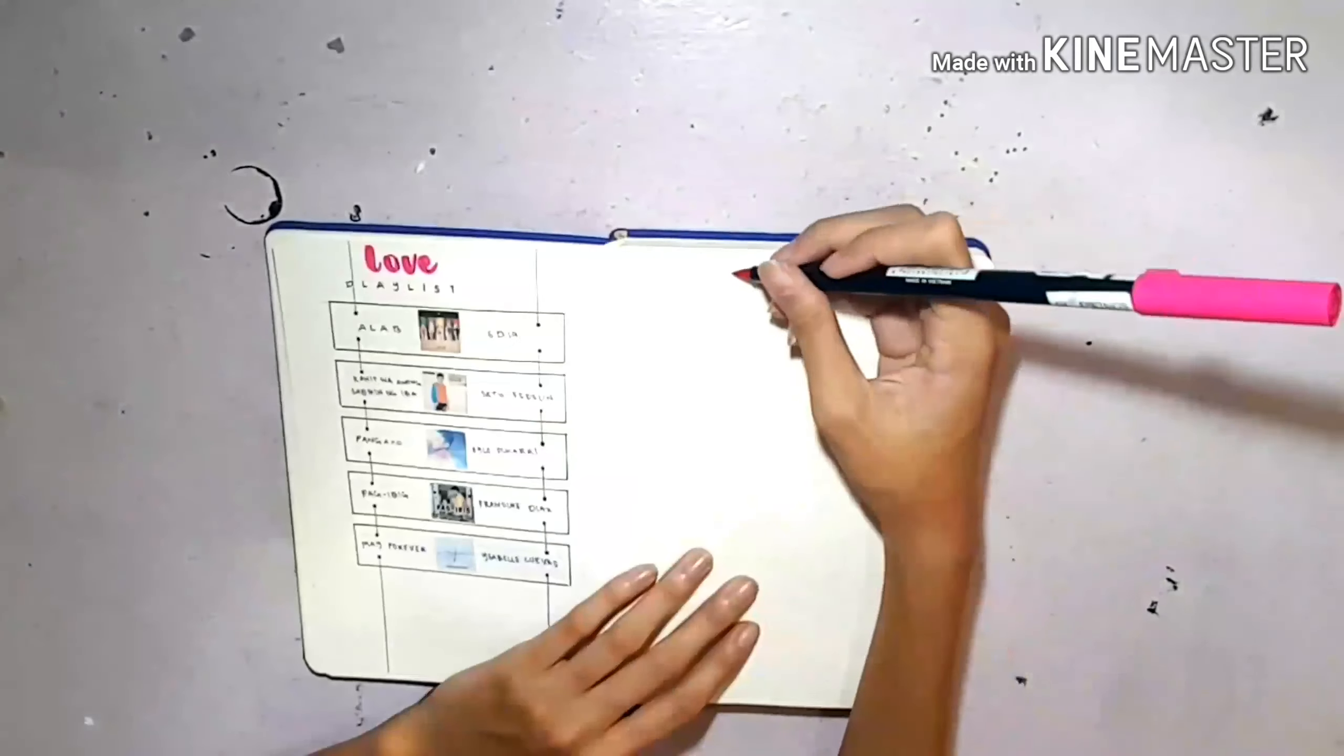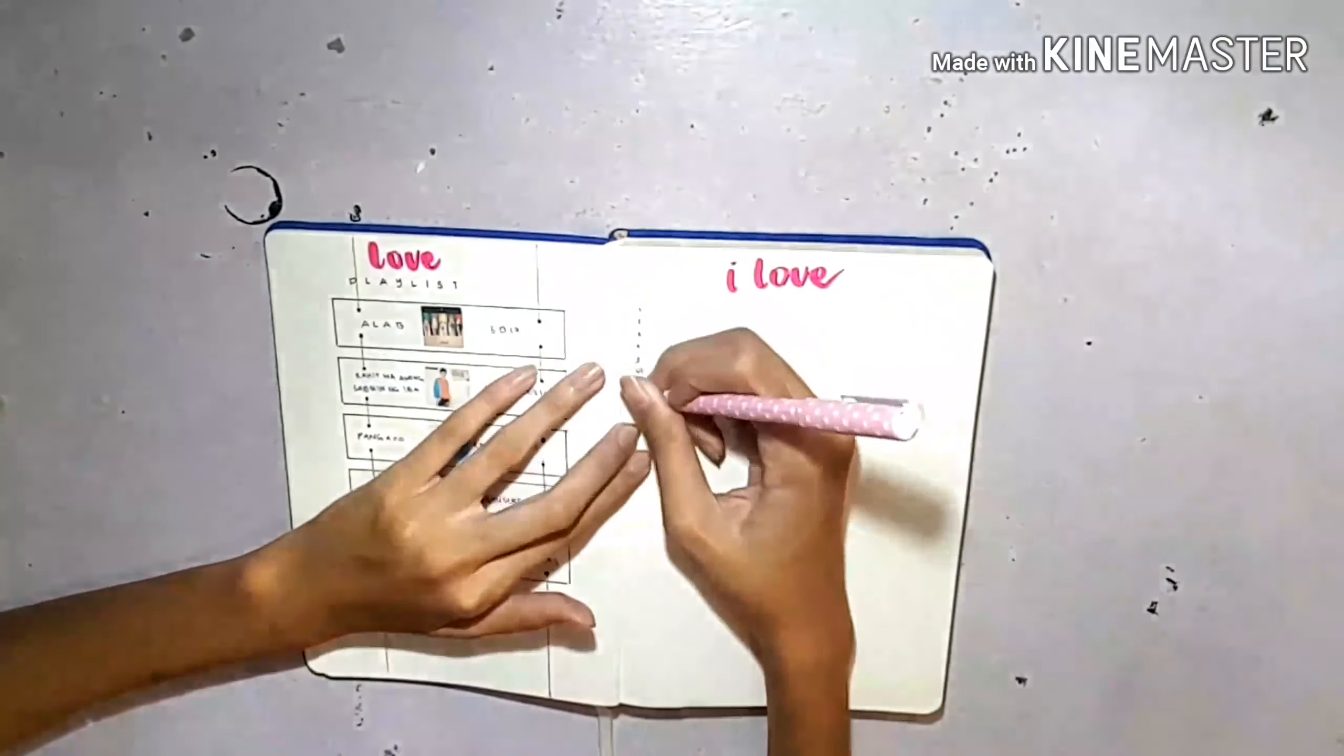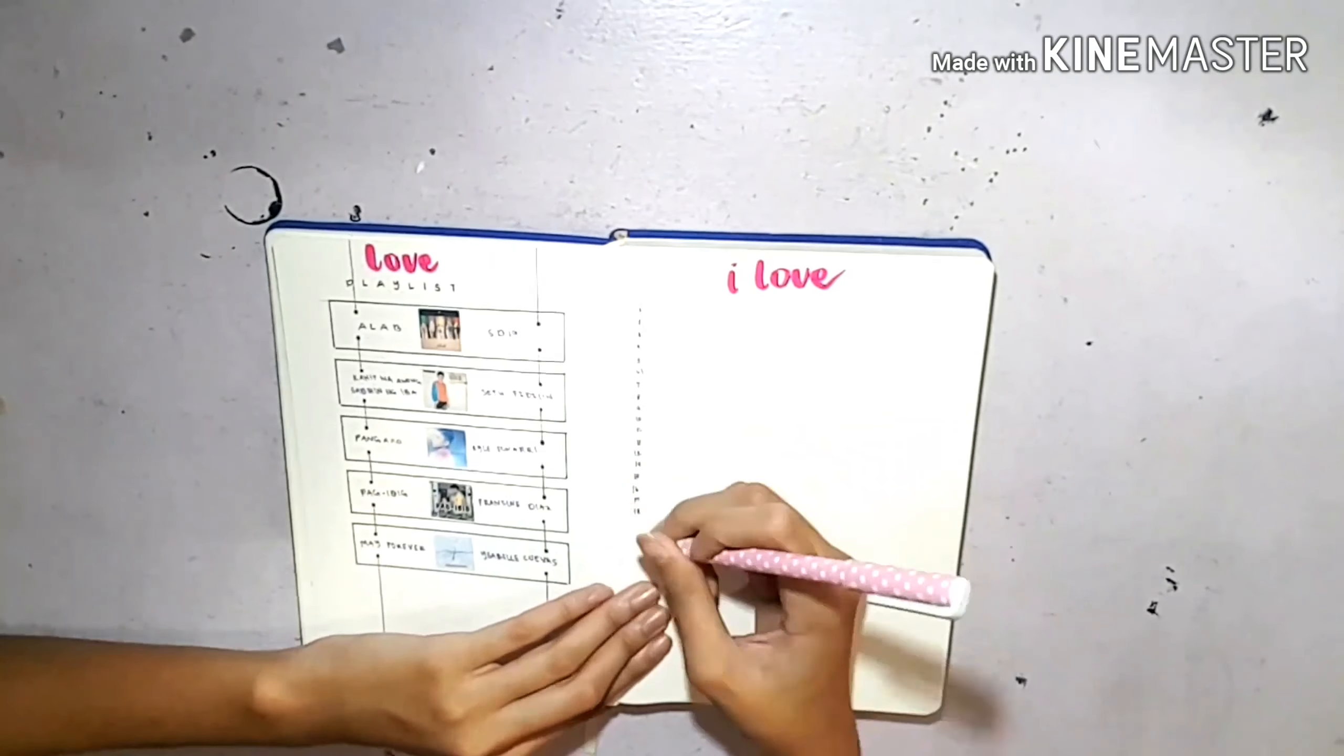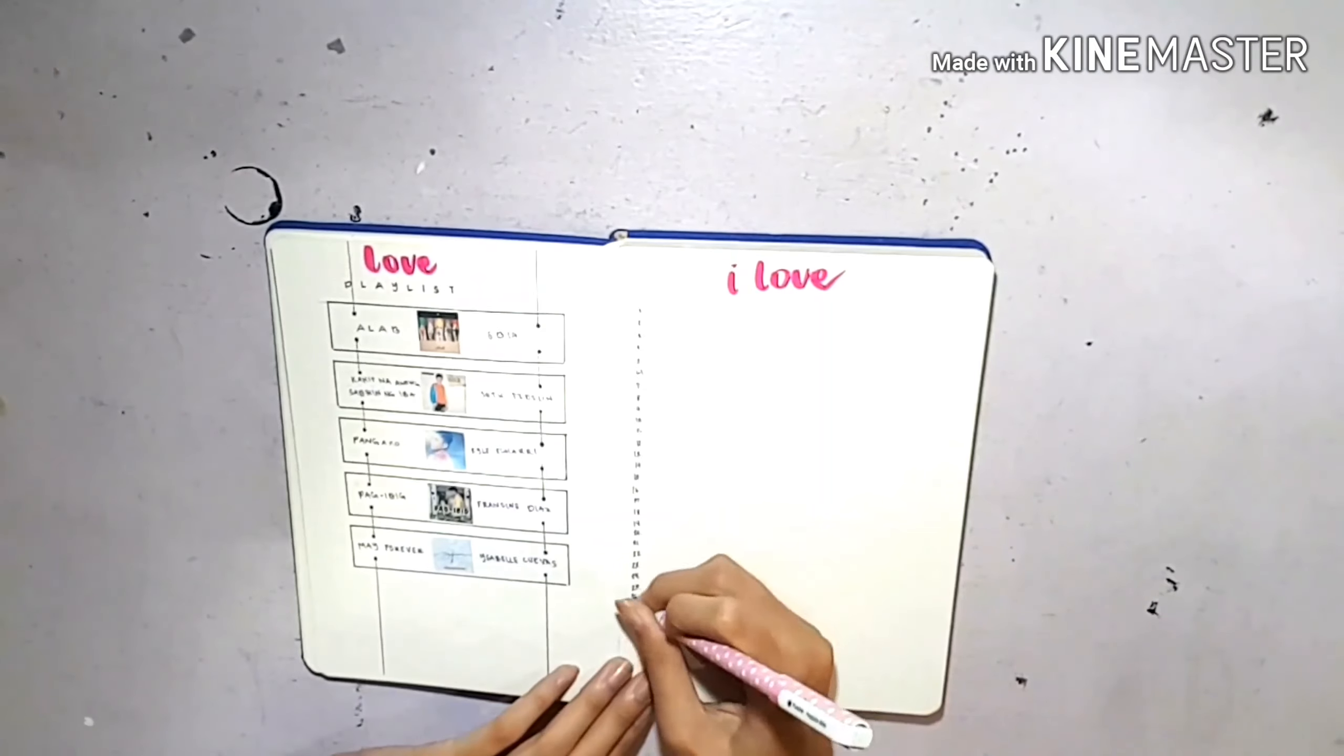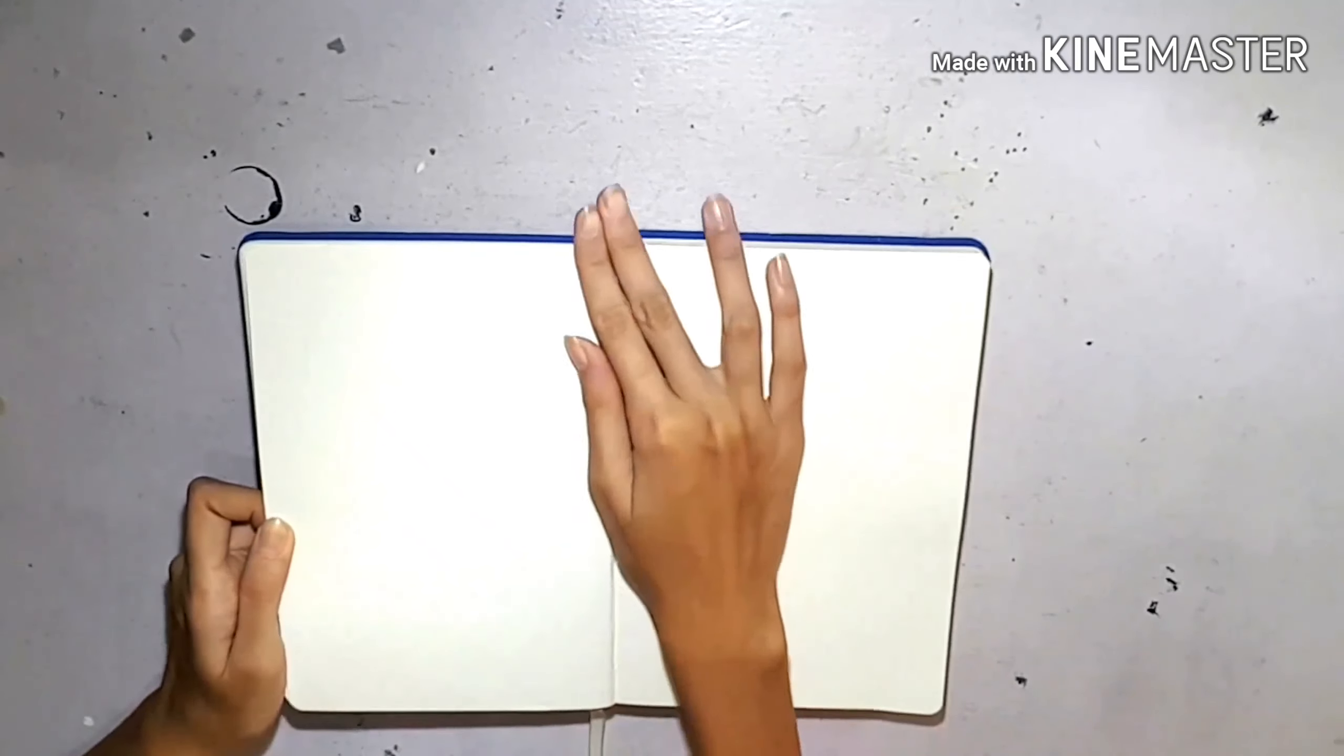For the page next to that I'm putting like a gratitude log or things that I love. I'll be writing one thing that I love every day. As you can see I wrote numbers 1 to 29.